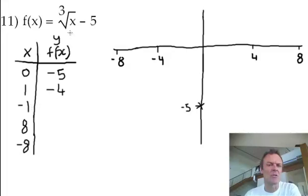I'm going to put a negative 1 in here. What's the cube root of negative 1? That's negative 1. Negative 1 minus 5 is negative 6. Remember you can cube root negatives.